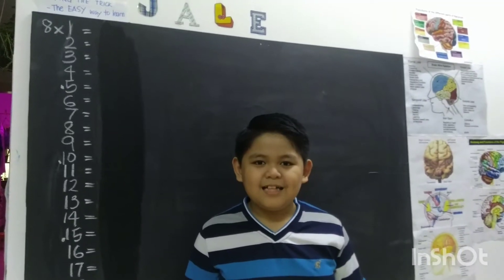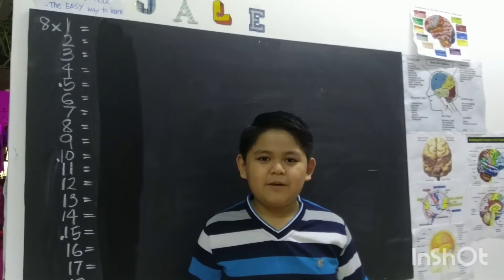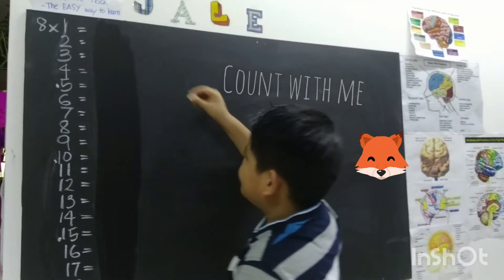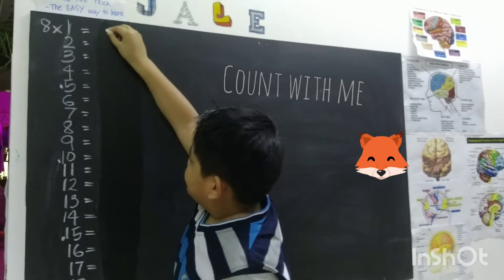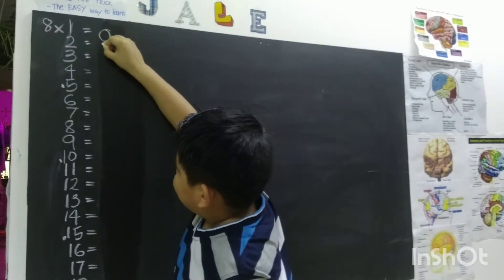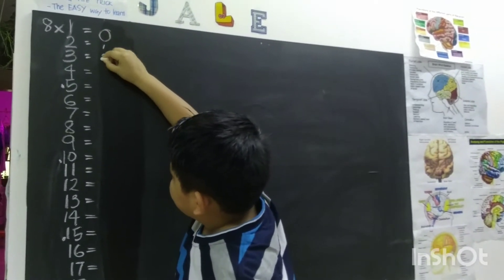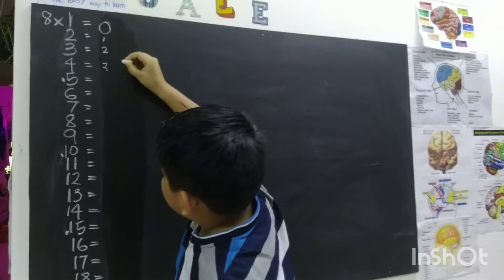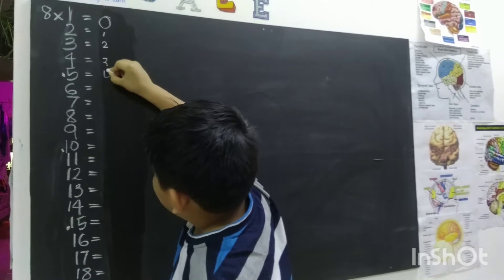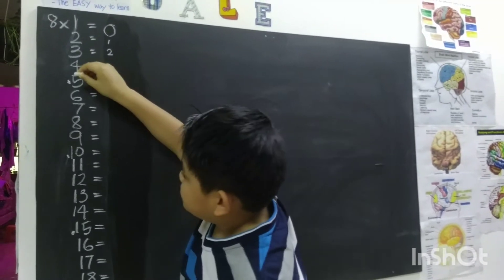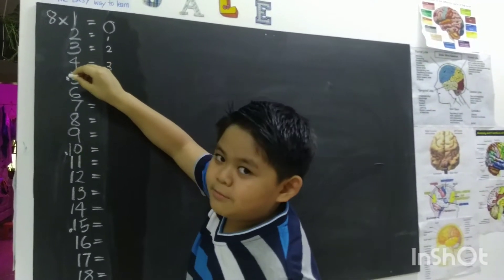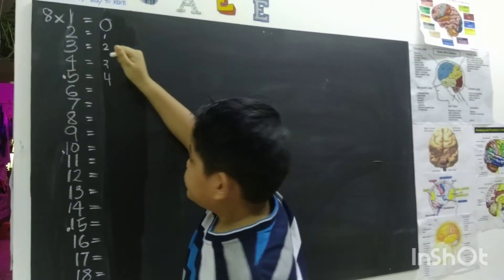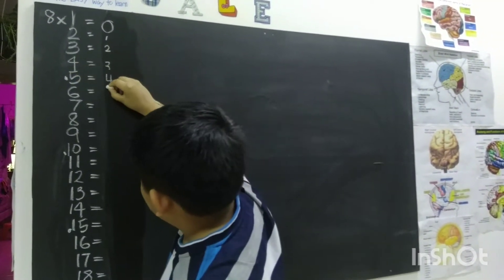Now, let's start counting from zero. Zero, one, two, three, four. This mark means that we need to repeat the number. So another four.